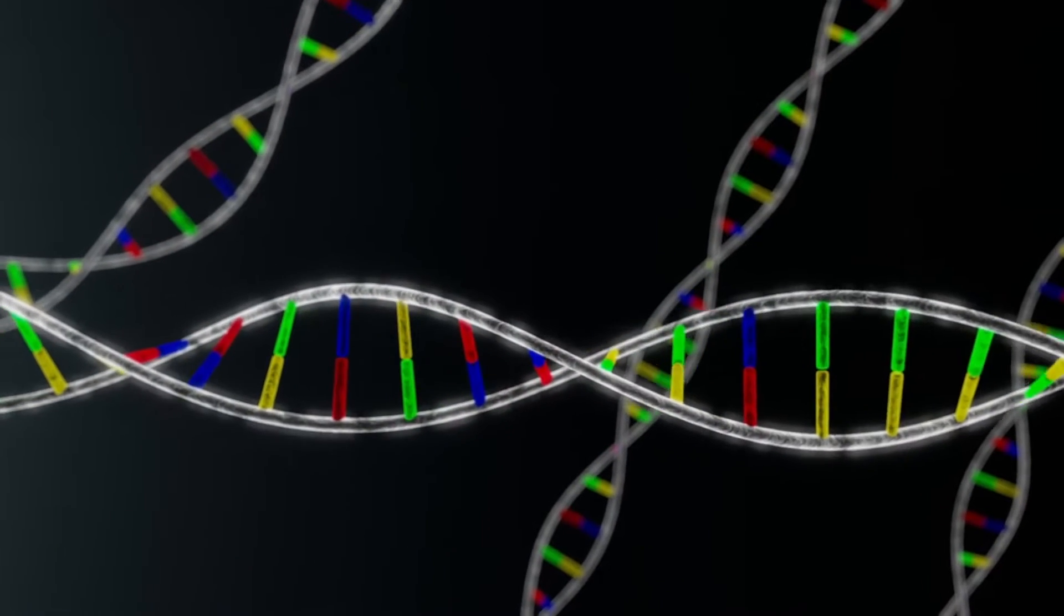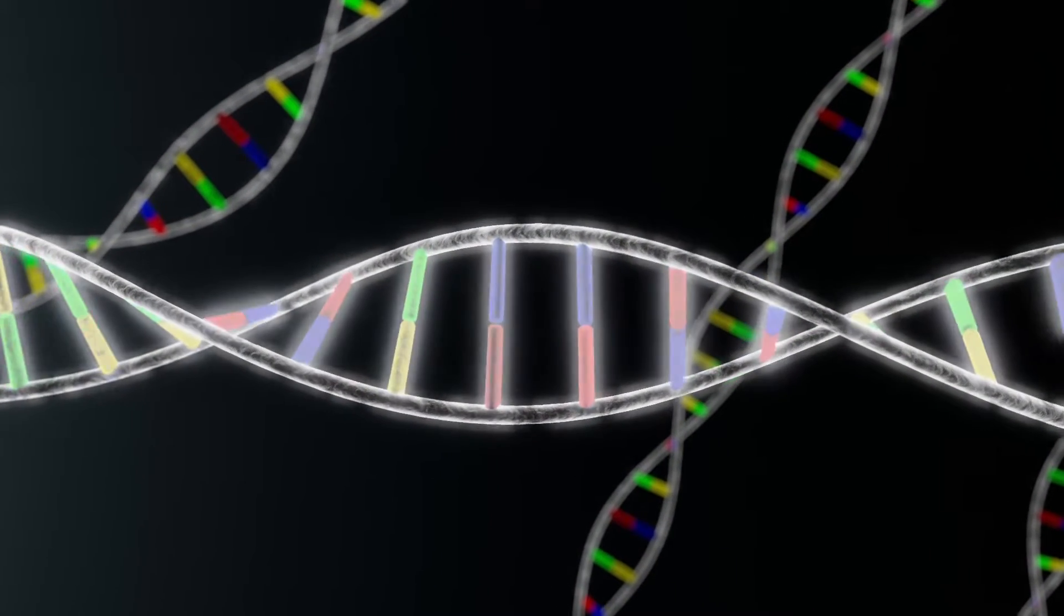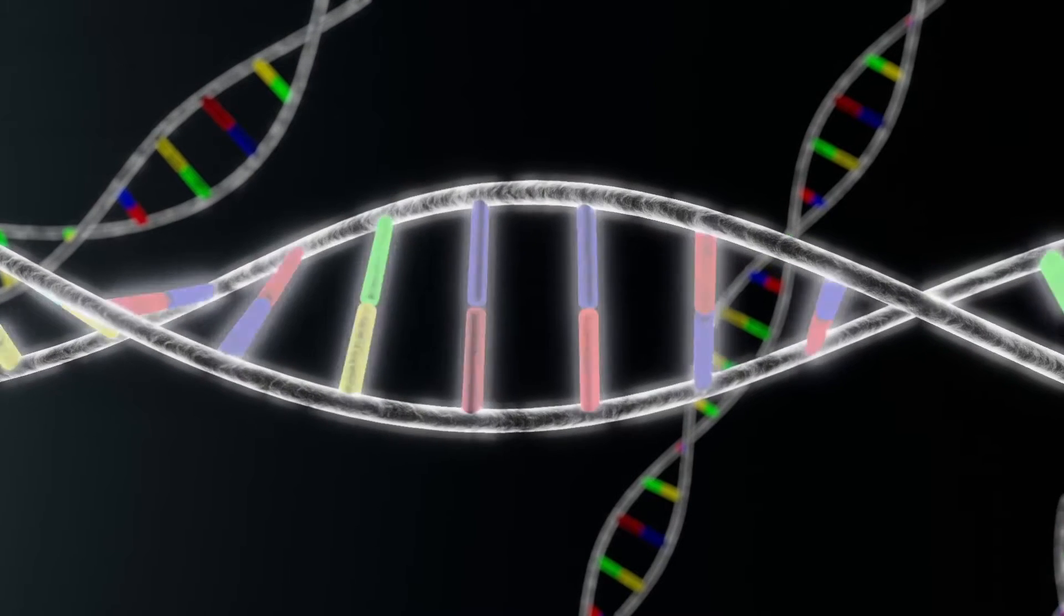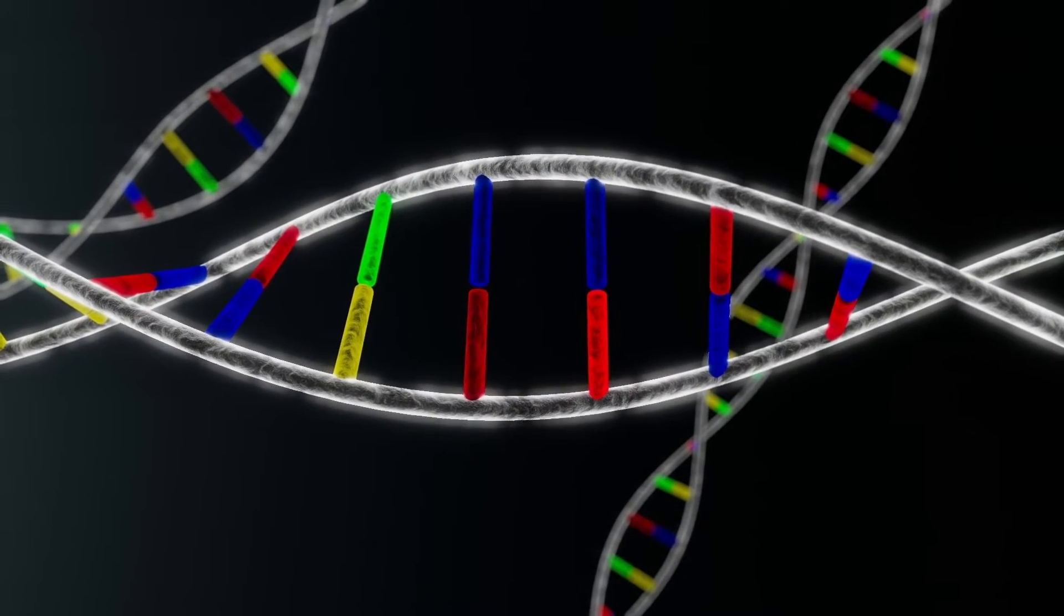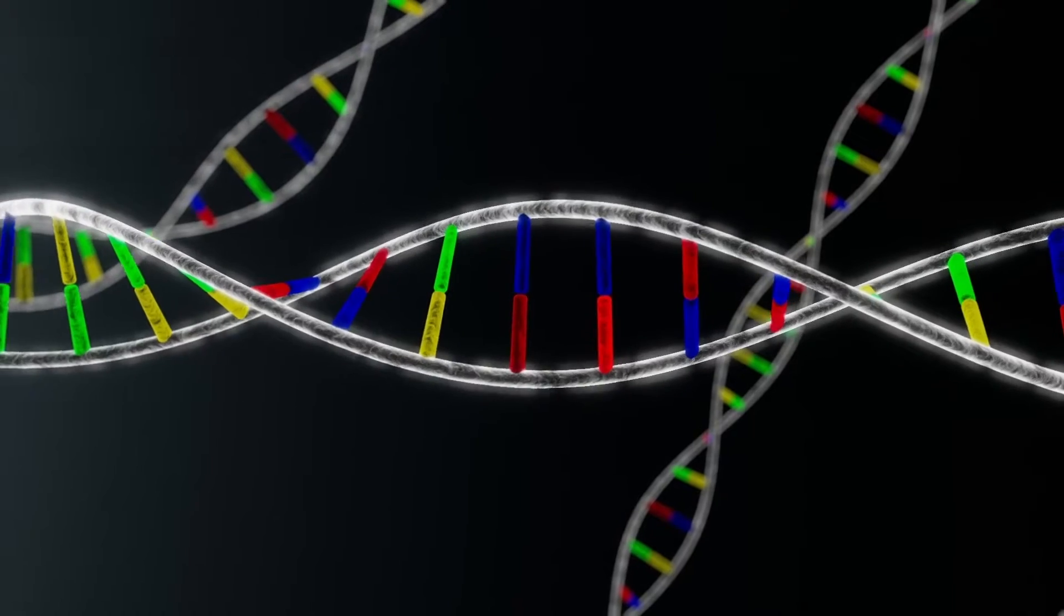The CRISPR-Cas9 system is capable of recognizing a specific DNA sequence in a malfunctioning cell. This approach can be used to disable or repair a part of a gene.